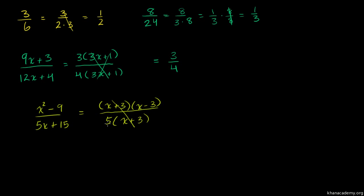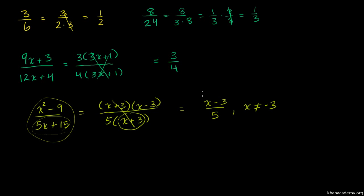We can cancel them out and say this is going to be equal to (x − 3) over 5. But we have to be very careful — we must exclude the values of x that would have made the denominator equal to 0, making the entire expression undefined. So we write this as (x − 3)/5, but x cannot be equal to negative 3, because negative 3 would make the denominator 0. This condition is what makes these two expressions truly equivalent.